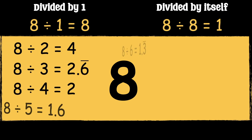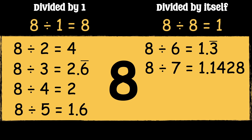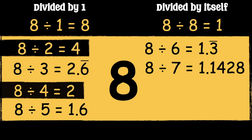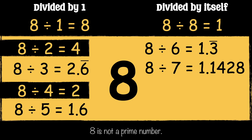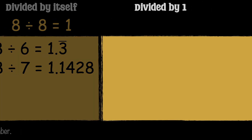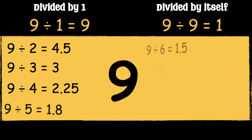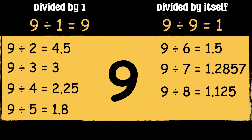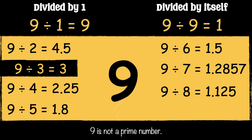Let's see what numbers we can divide 8 by. 8 can be divided by 1 and itself, but it can also be divided by 2 and 4, so 8 is not a prime number. 9 can be divided by 1 and itself, but it can also be divided by 3, so 9 is not a prime number.